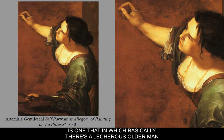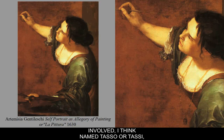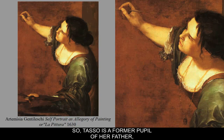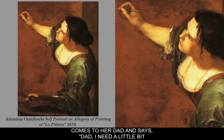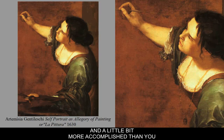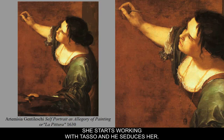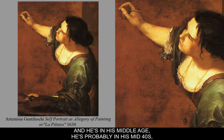Artemisia Gentileschi's biography involves a lecherous older man named Tassi — a former pupil of her father Orazio Gentileschi. At about the age of 16, Artemisia comes to her dad and says she needs a little more training, asking if he could apprentice her under a painter who is further along and more accomplished. She starts working with Tassi, and he seduces her. He's in his mid-forties, and he says he'll marry her if she sleeps with him.